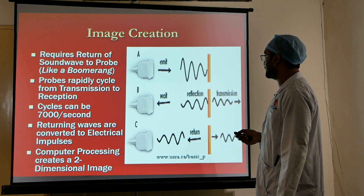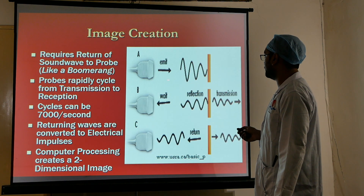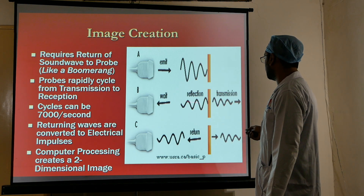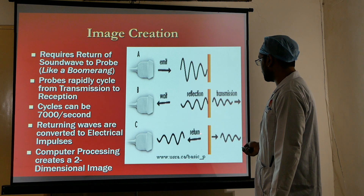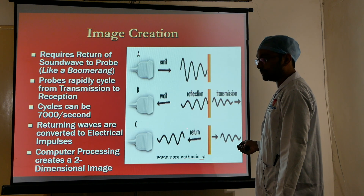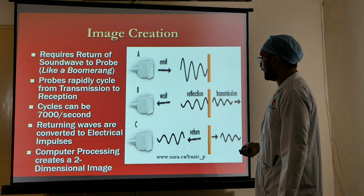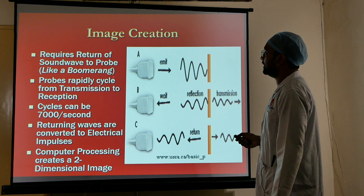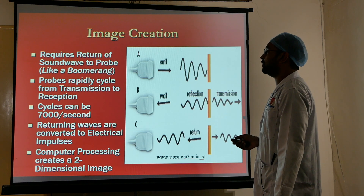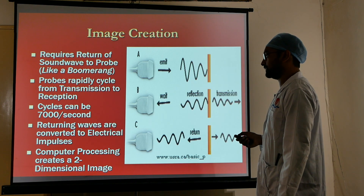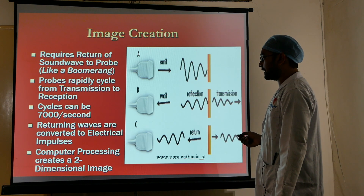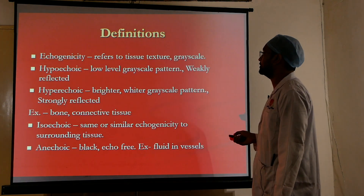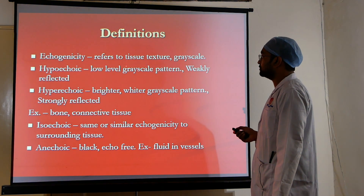The transmitter gives energy to the transducer, which emits ultrasound waves. These waves hit the body surface — some are transmitted and some are reflected back to the transducer. The processor ultimately forms an image. It requires return of sound waves to the probe, just like a boomerang. The probes rapidly cycle from transmission to reception, up to 7,000 cycles per second, and computer processing creates a two-dimensional image.